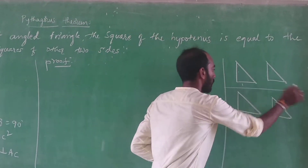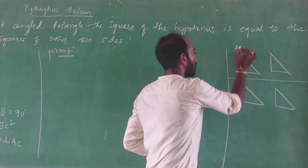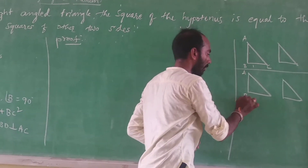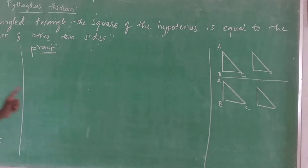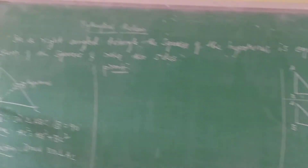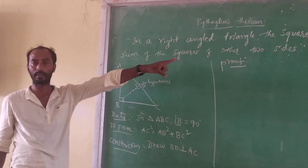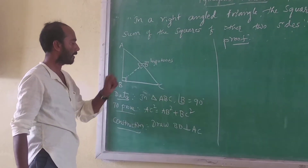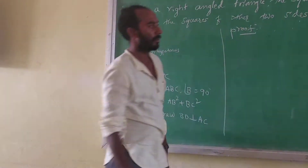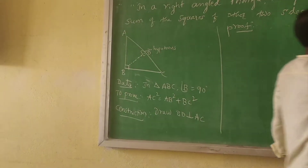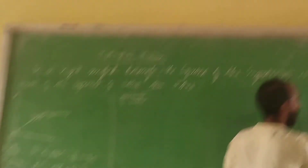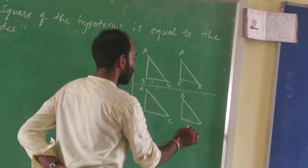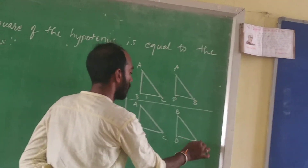First triangle is ABC. This is ABC. This one is ABC. ABDC. The same one — ABBC.